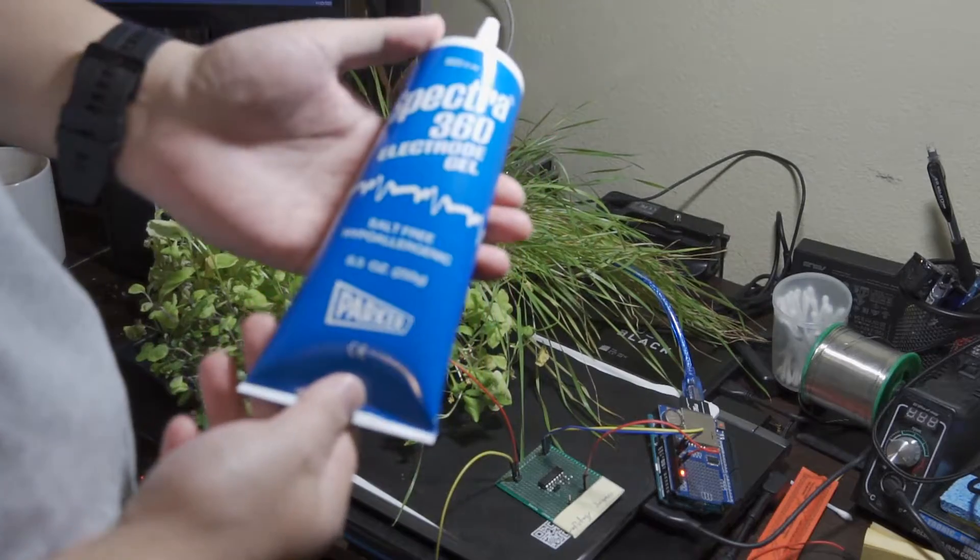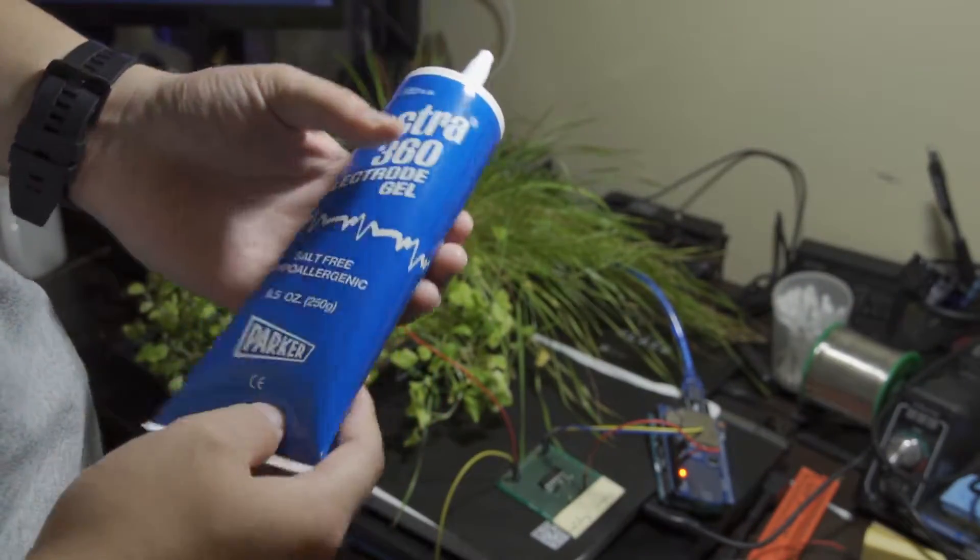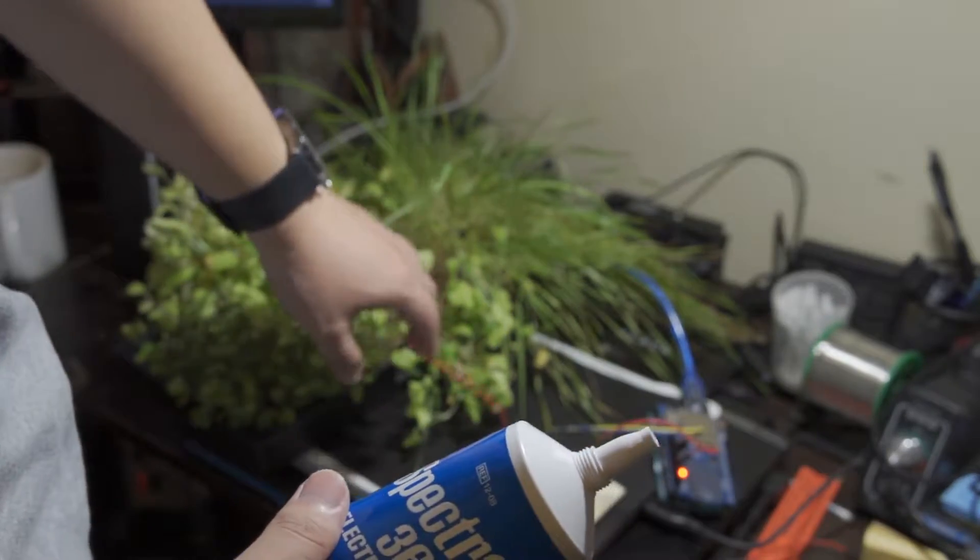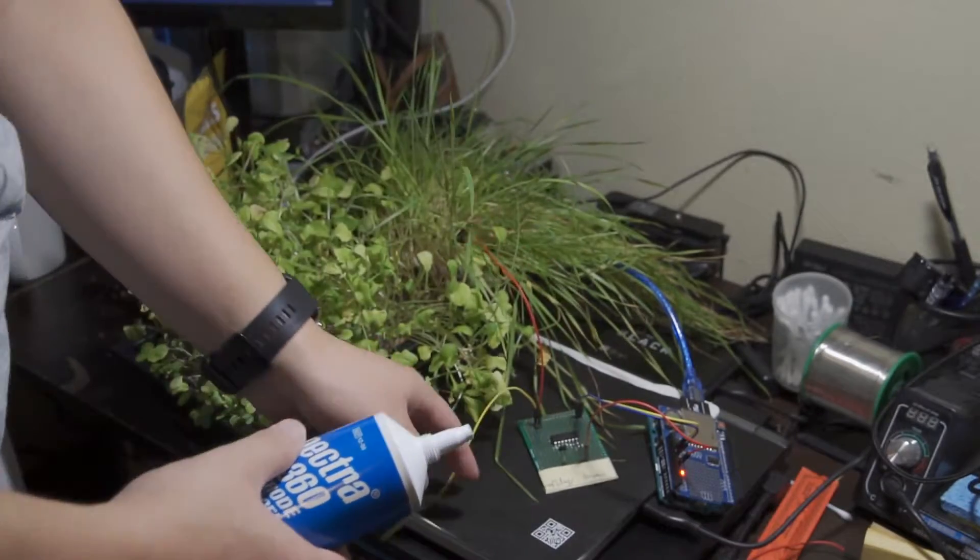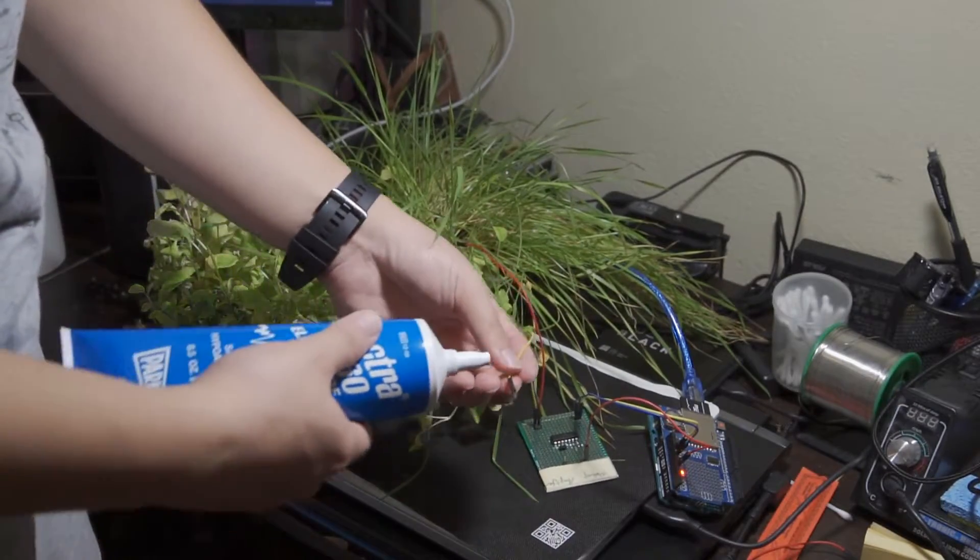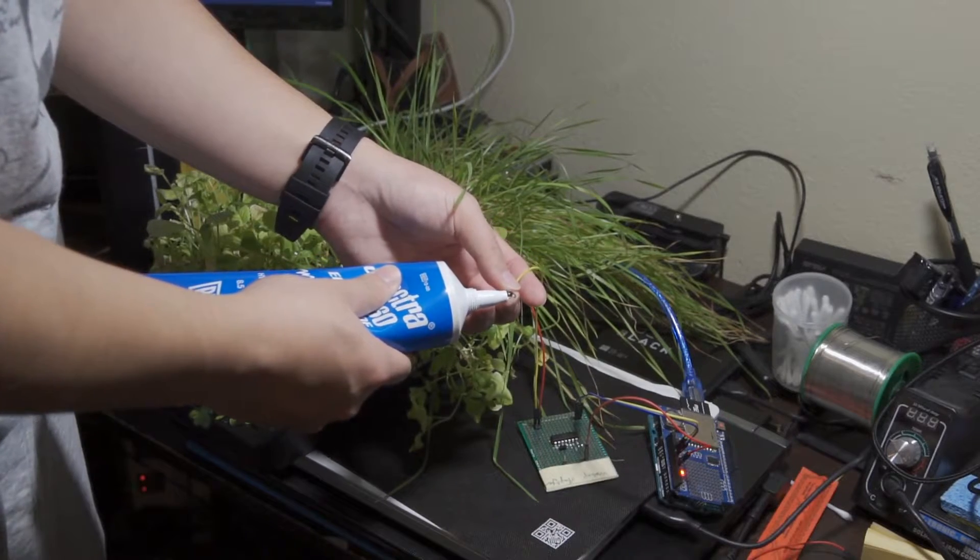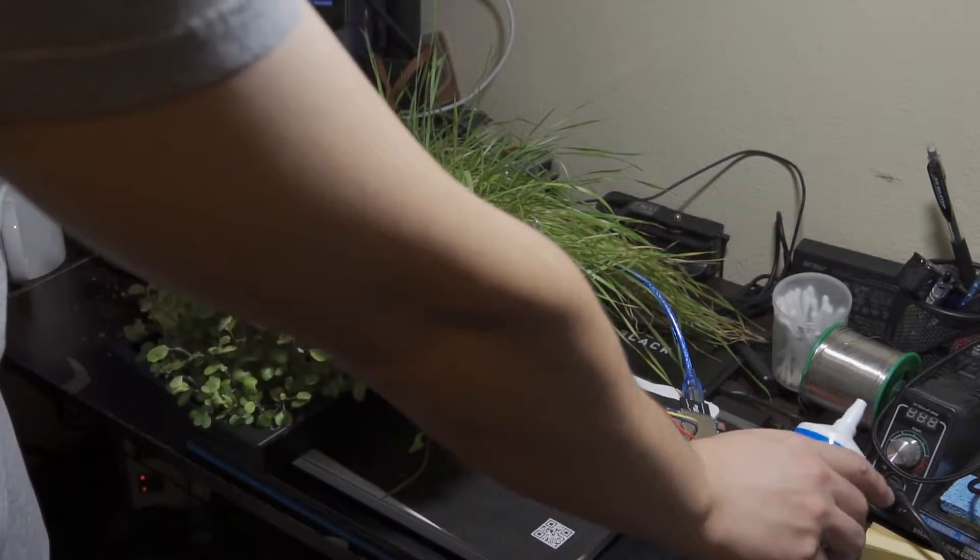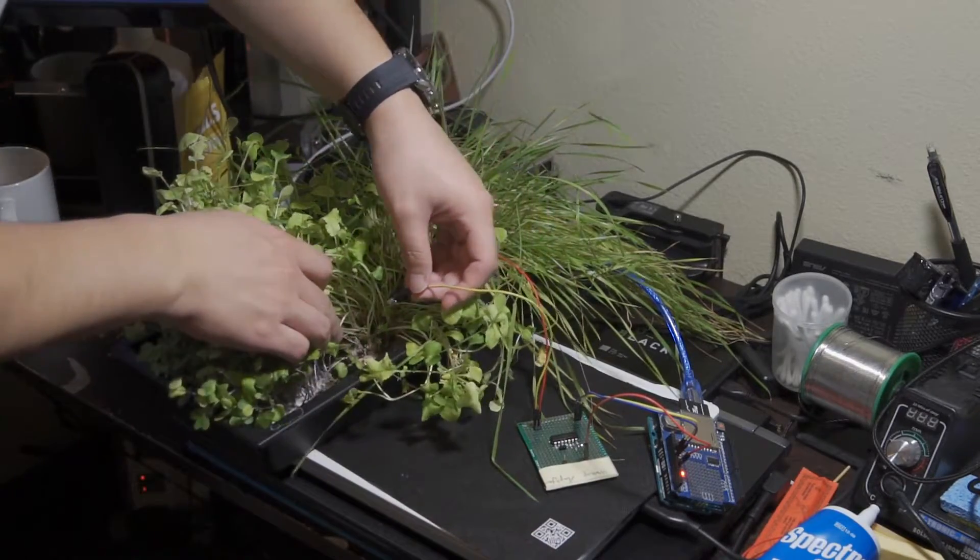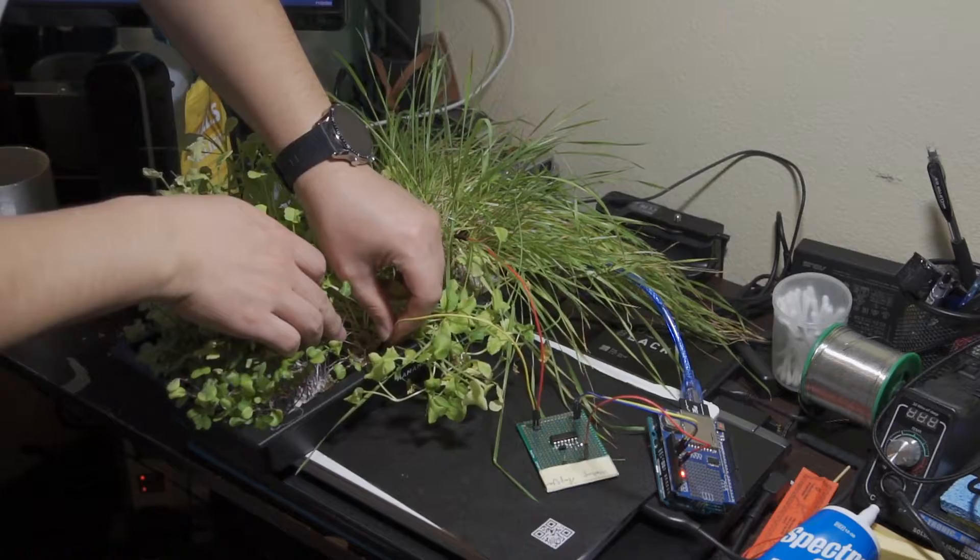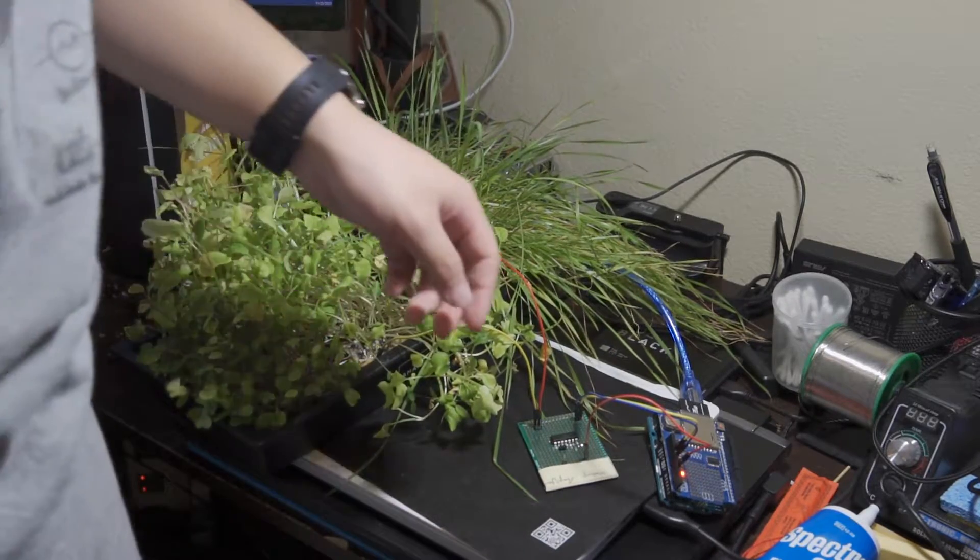I'm using this kind of electro gel to get the best performance and the lowest resistance between the plants and the wires. So let me first connect this. I'm going to drip some electro gel to it, and then insert it onto the base, or actually the soil, of the plants.